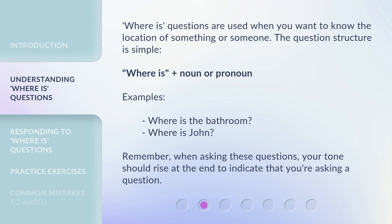'Where is' questions are used when you want to know the location of something or someone. The question structure is simple: 'Where is' plus a noun or pronoun. Examples: 'Where is the bathroom?' 'Where is John?' Remember, when asking these questions, your tone should rise at the end to indicate that you're asking a question.